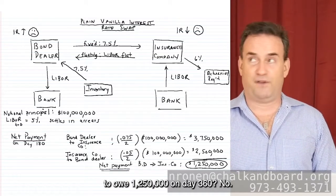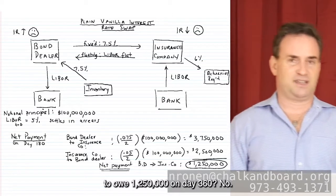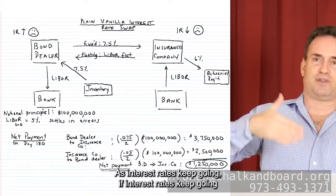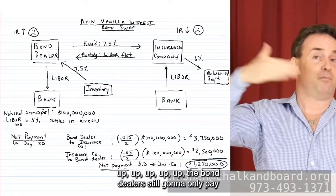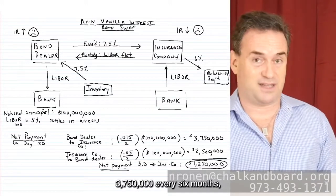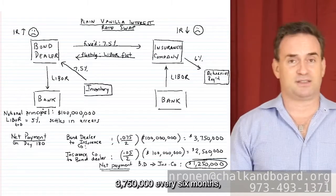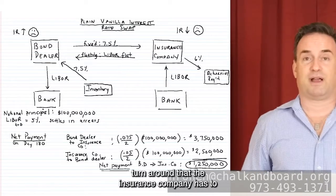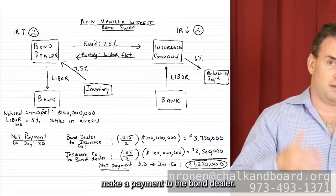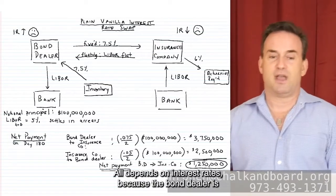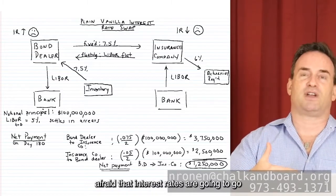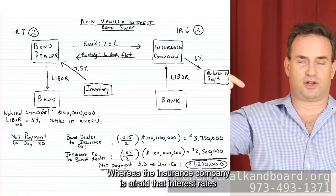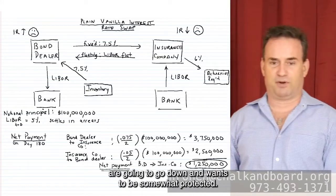Does that mean the bond dealer will always owe $1,250,000? No — it depends on what happens to interest rates. If interest rates keep rising, the bond dealer still pays $3,750,000 every six months but starts to receive more floating rate payments. Eventually the insurance company might have to make a payment to the bond dealer. The bond dealer is afraid rates will go up; the insurance company is afraid rates will go down. Each wants to be protected.